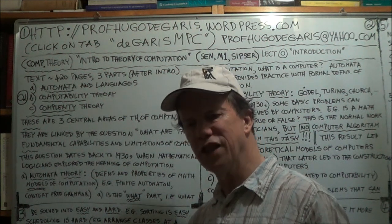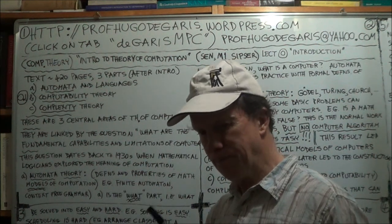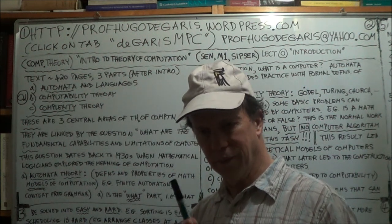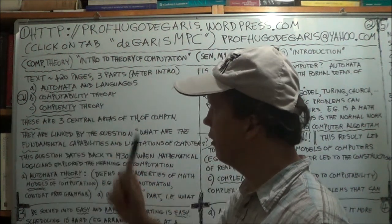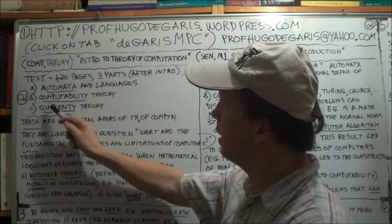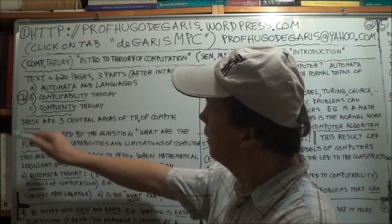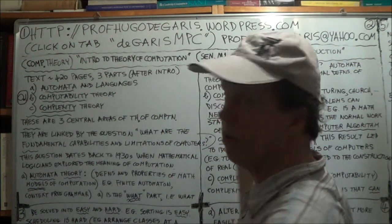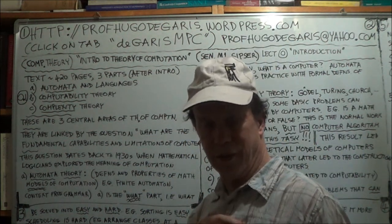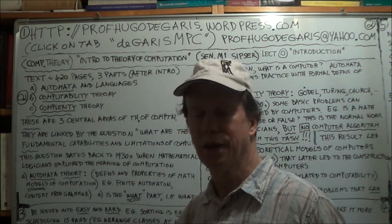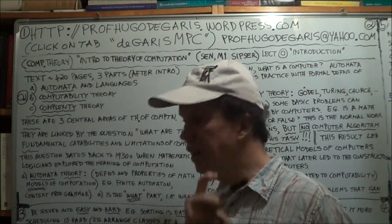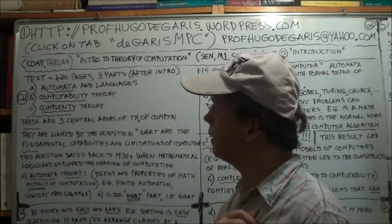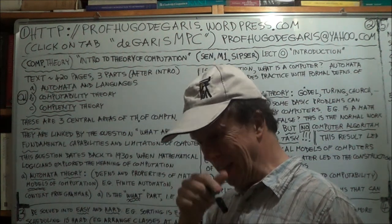So talking about easiness and hardness for a computer to solve a problem — that is the topic of complexity theory. So those are the three main areas. The book is divided into three main parts and one preliminary part, which is what we're starting on right now — lecture zero, which is introduction, presenting notations and the basic mathematical tools you'll need, like set theory.